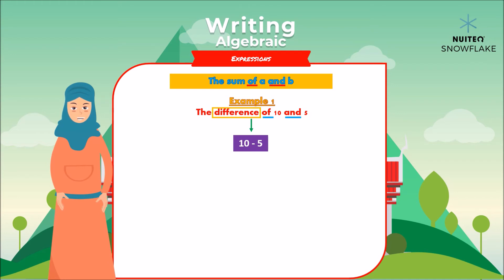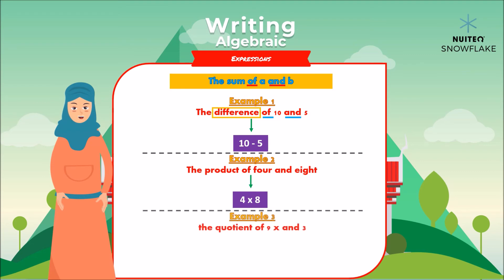Now write the following expression: the product of 4 and 8. Very good. We can write this expression like this. And what about the quotient of 9x and 3? Very good. The keyword is quotient, which tells us the operation is division.